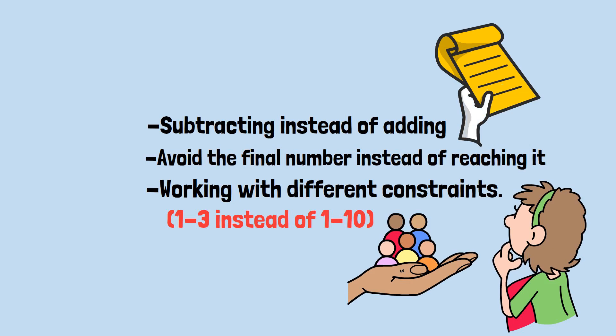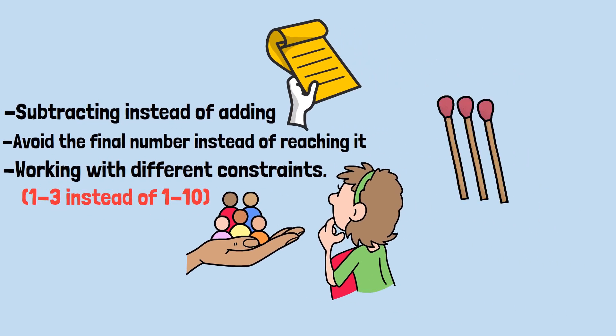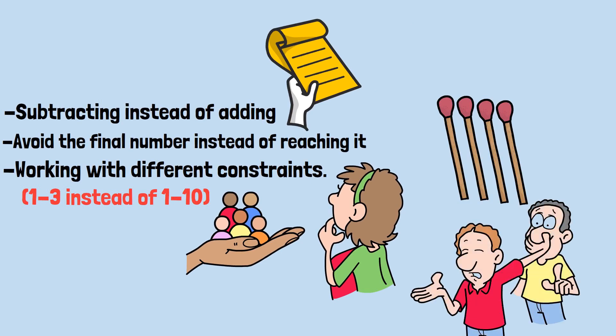The key insight comes from analyzing the endgame positions. If it's your turn and there are 2, 3, or 4 matchsticks remaining, you can force your opponent to take the last one. If there are 2, you take 1, opponent must take the last. If there are 3, you take 2, opponent must take the last. If there are 4, you take 3, opponent must take the last.